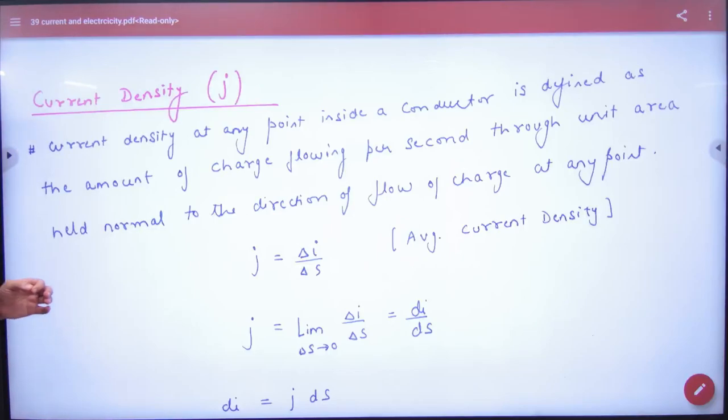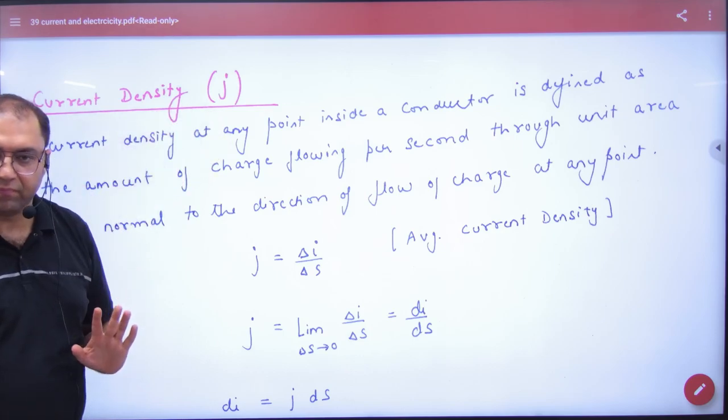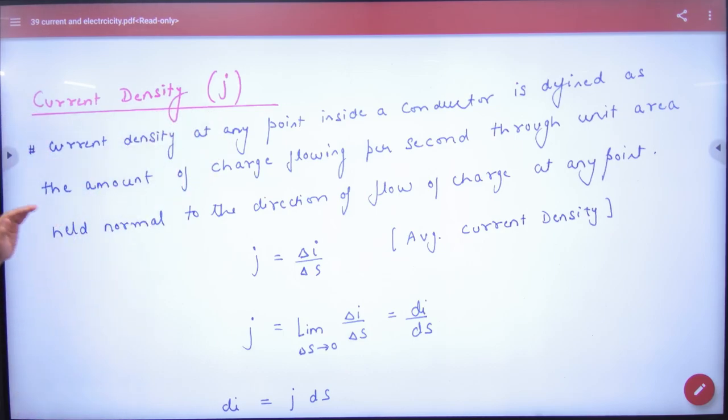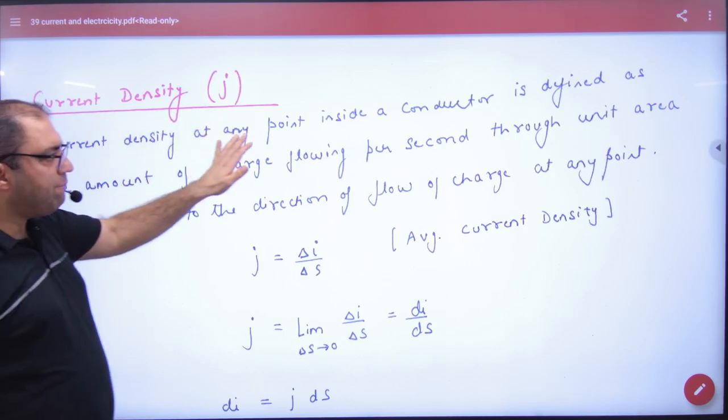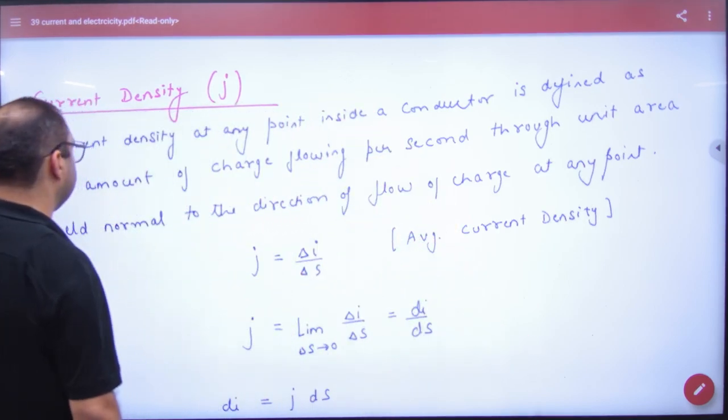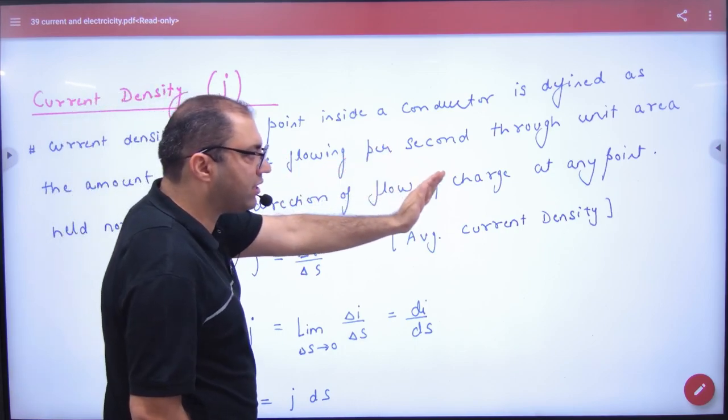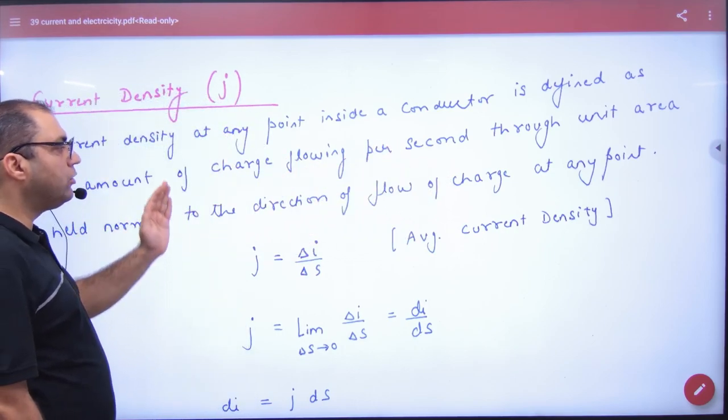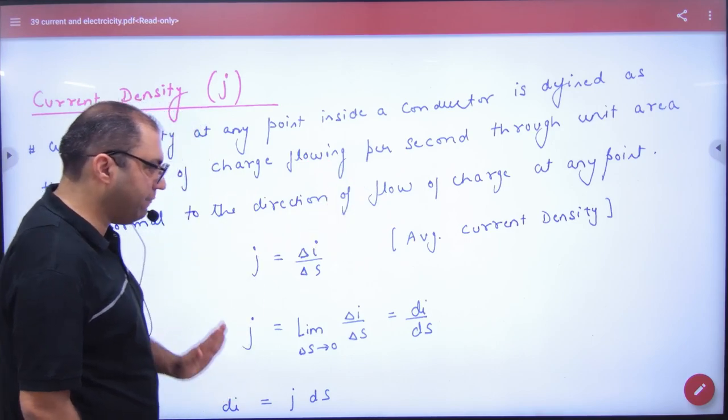Next topic is current density. Current density ka symbol J. Point number one: current density at any point inside a conductor is defined as the amount of charge flowing per second through unit area, normal to the direction of flow of charge at any point.